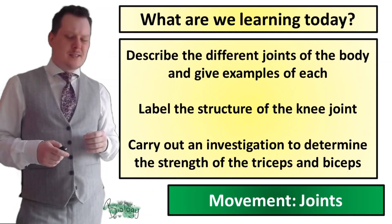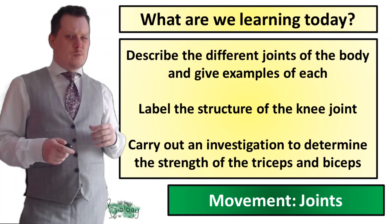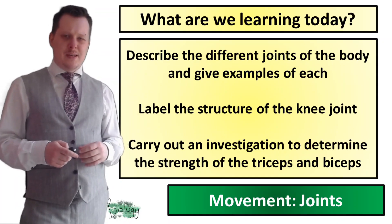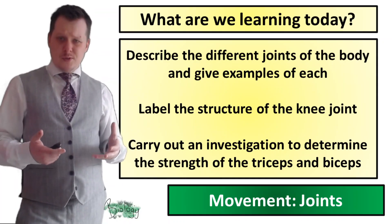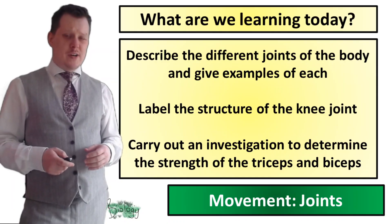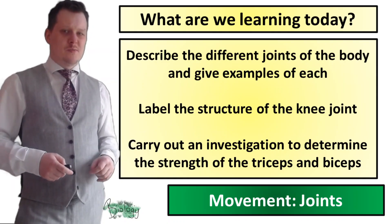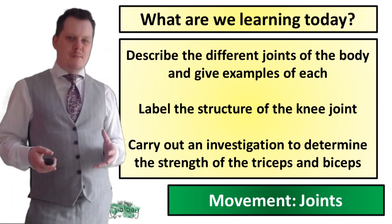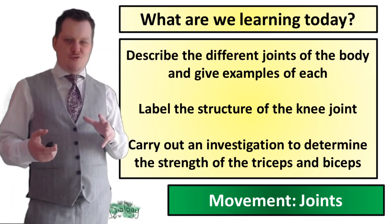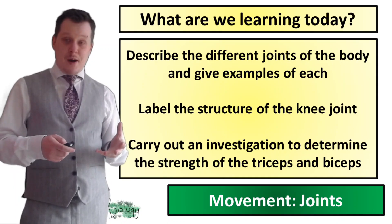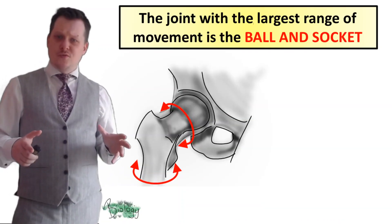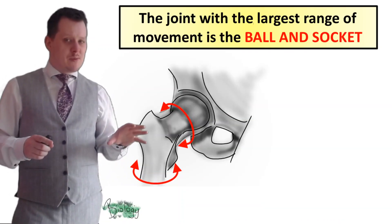In today's lesson we're going to describe the different joints of the body and give examples of each. We're going to label the structure of a knee joint, and we're going to look at some data for an investigation to determine the strength of the triceps and the biceps.